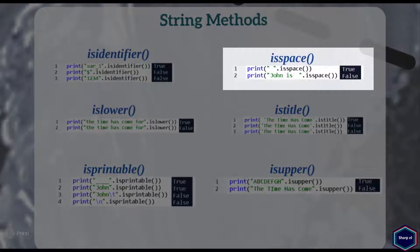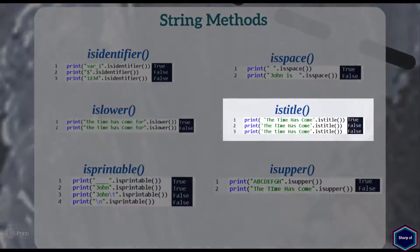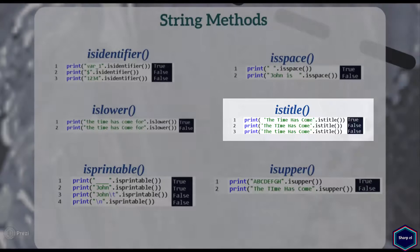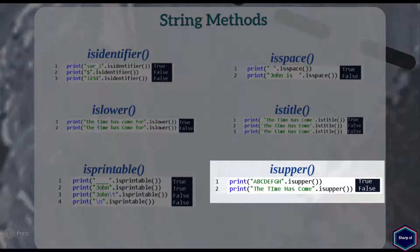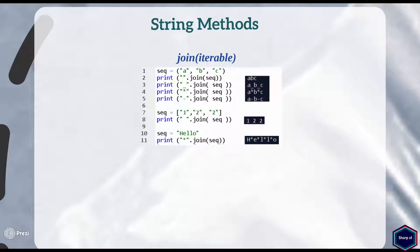The isspace method returns true if there are only whitespace characters in the string; otherwise it returns false. The istitle method returns boolean true if the entire string is a title case string — that is, the first character of each word is an uppercase letter. The isupper method returns true if the entire string is an uppercase string. The join method takes an iterable such as a list as an argument and returns a string by putting the separator string between each element of the iterable. Note that the iterable argument can only contain string values.